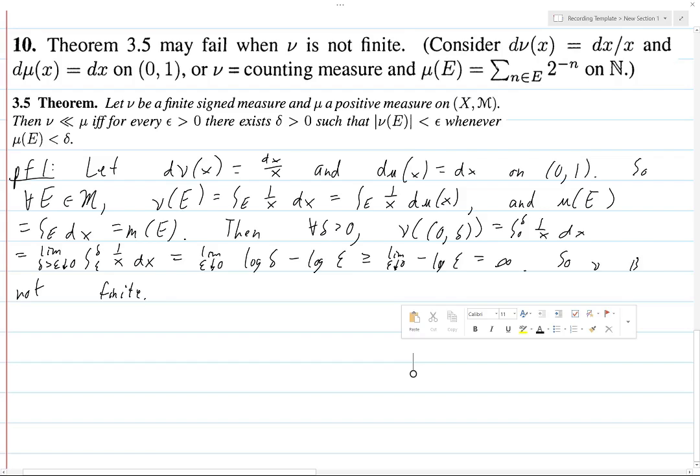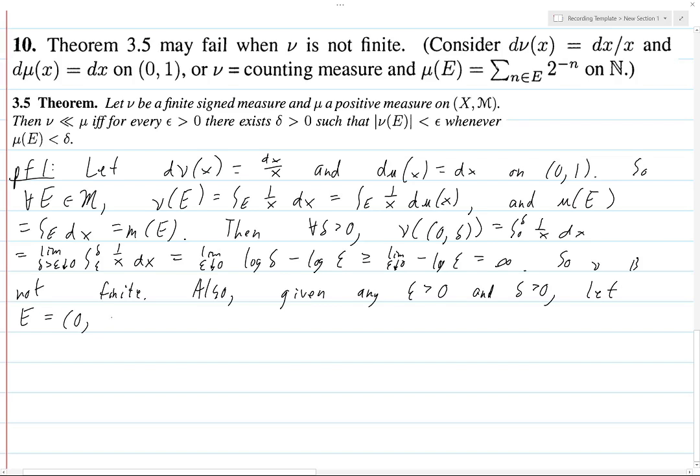Okay, so, we know that ν is not finite. Also, because we did this with arbitrary delta, that will help make this next part a little quicker. Given any epsilon greater than 0, and delta greater than 0, let E be the set (0, δ/2). Then we've got μ(E) is equal to delta over 2, which is obviously less than delta,